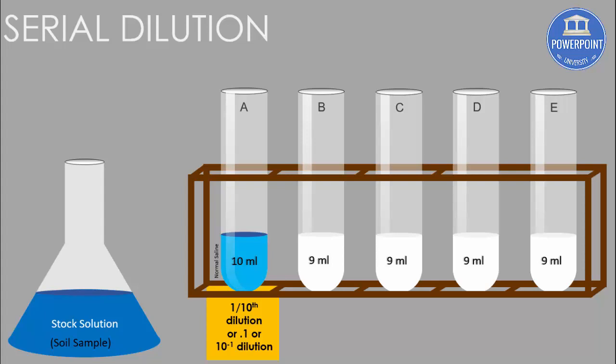The next step, I'm going to take the sample from test tube A, 1 ml, and I'm going to put it in test tube B. So when I click again you can see here it goes, and when I click I'm going to put it in test tube B. This also becomes 10 ml, and this is 10 to the power of minus two dilution.